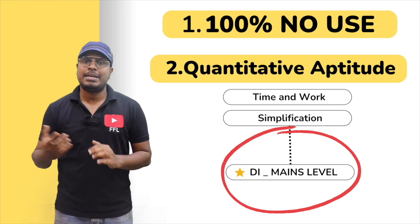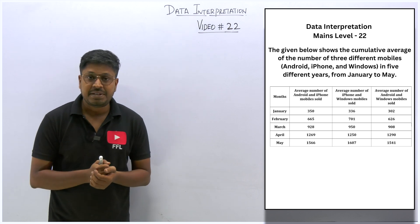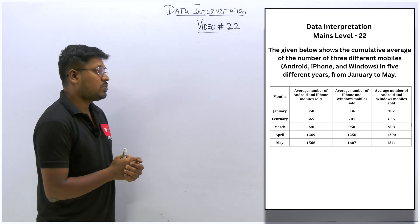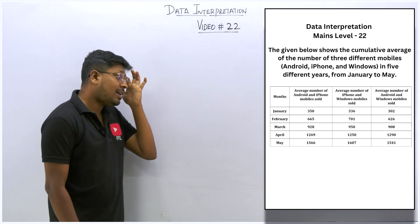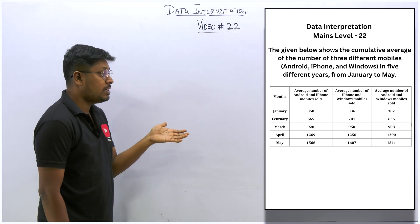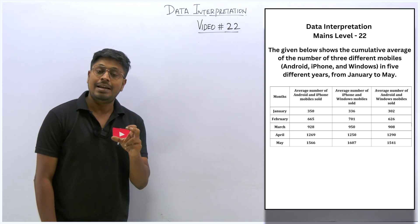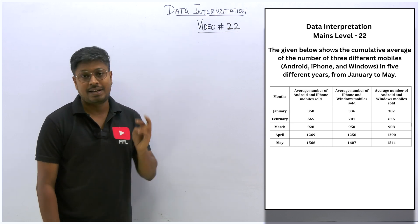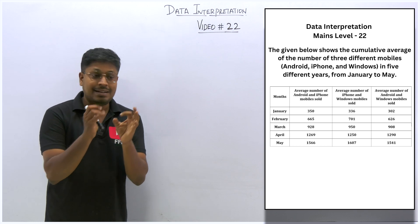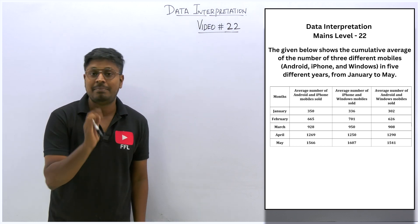So this is video number 22 on data interpretation mains level questions. We are going to solve a question based on the concept of average. They have given iPhone, Android, and Windows mobile sold — three different mobiles — and all values are in terms of average: average of two products, average of two products. This is a very important question and these kinds of questions can be seen widely on many clerk-level mains exams.